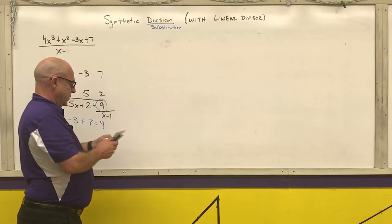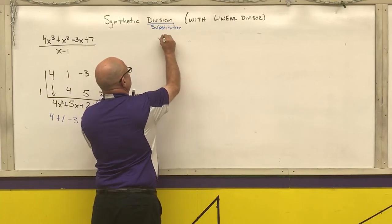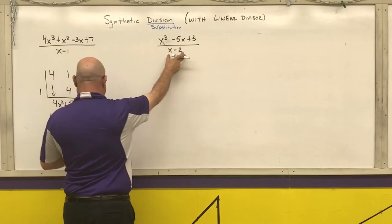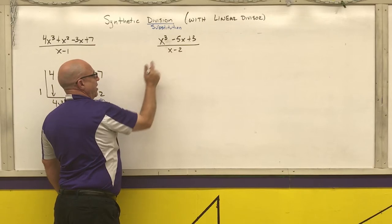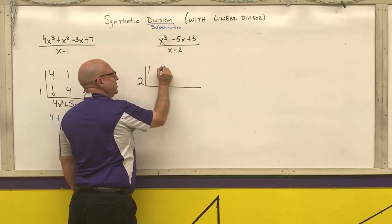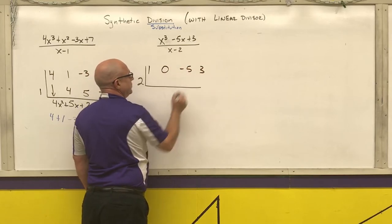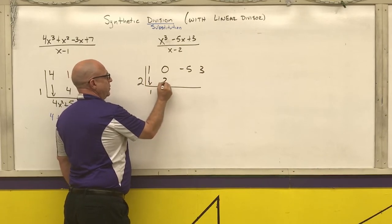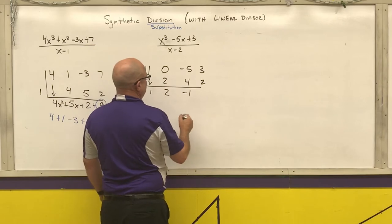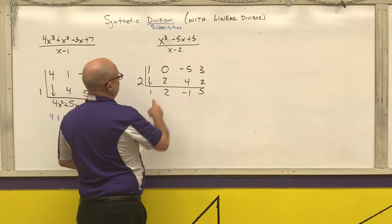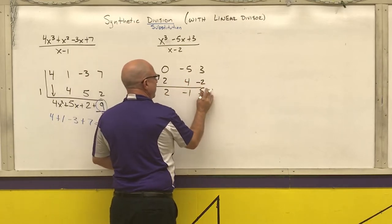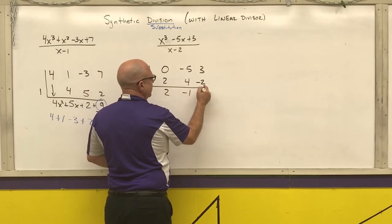The next example has a little twist: x cubed minus 5x plus 3 over x minus 2. Step 1: set x minus 2 equal to zero and solve — that's a 2. Then I copy my coefficients: 1, but I'm missing the x squared term so I have to put a 0, then negative 5, and then 3. Copy, multiply, add, multiply, add, multiply, add. I copied the 1. 1 times 2 is 2. 0 plus 2 is 2. 2 times 2 is 4. Negative 5 plus 4 is negative 1. Negative 1 times 2 is negative 2. 3 minus 2 is 1.